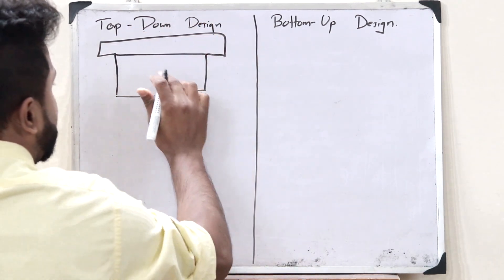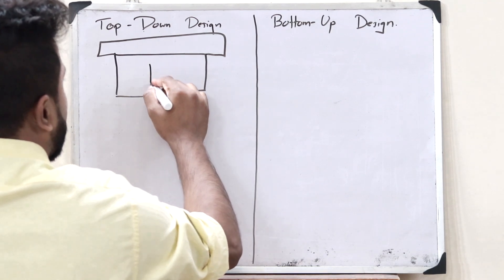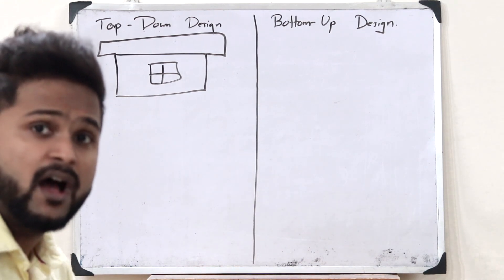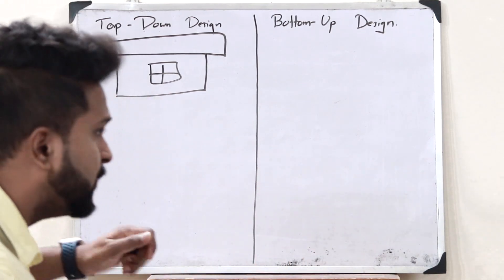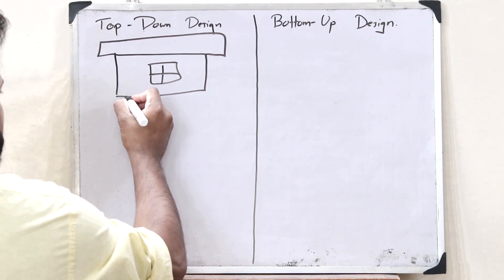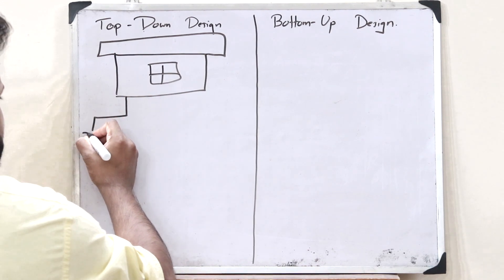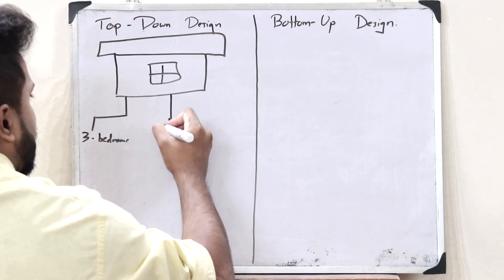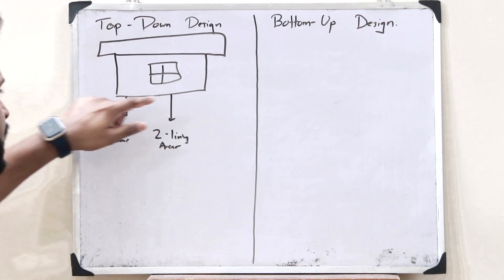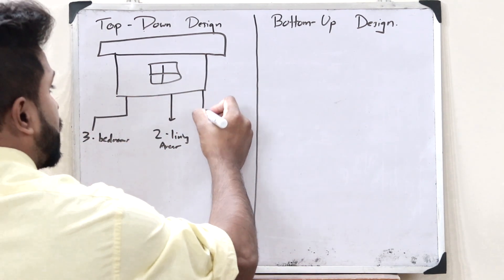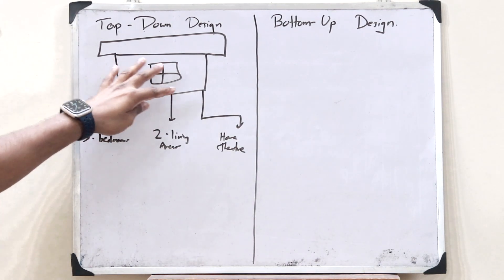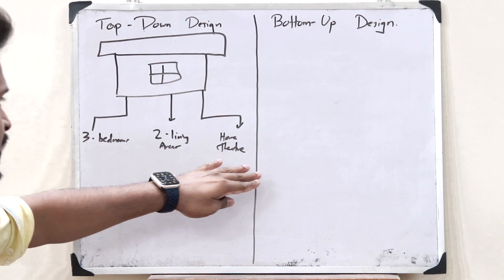I am seeing this particular house. This is the ultimate product — a house. Here, upon further investigation, I see that this particular house has got three bedrooms. And this particular house has got two living areas. And this particular house has got its own dedicated home theater. So, upon investigating this particular house, I find these three things.